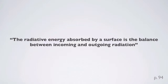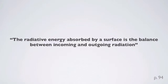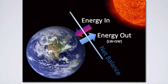The authors state that the radiative energy absorbed by a surface is the balance between incoming and outgoing radiation. This is a pretty simple diagram of how we calculate energy budgets.